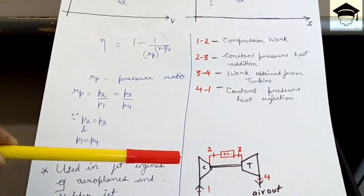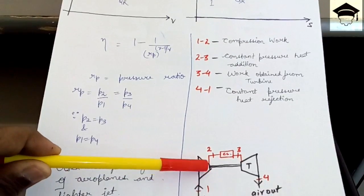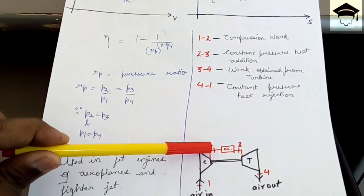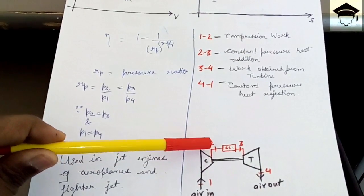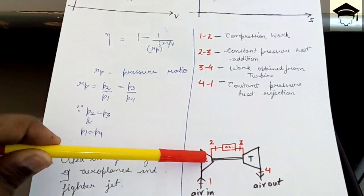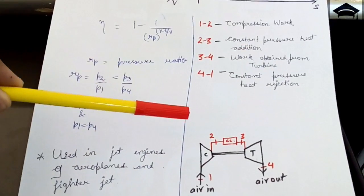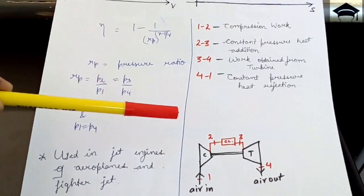And this combustion occurs because the air has oxygen and it already reaches up to some certain temperature from one to three. Because from one to two after compression the temperature and pressure of the air is already increased.